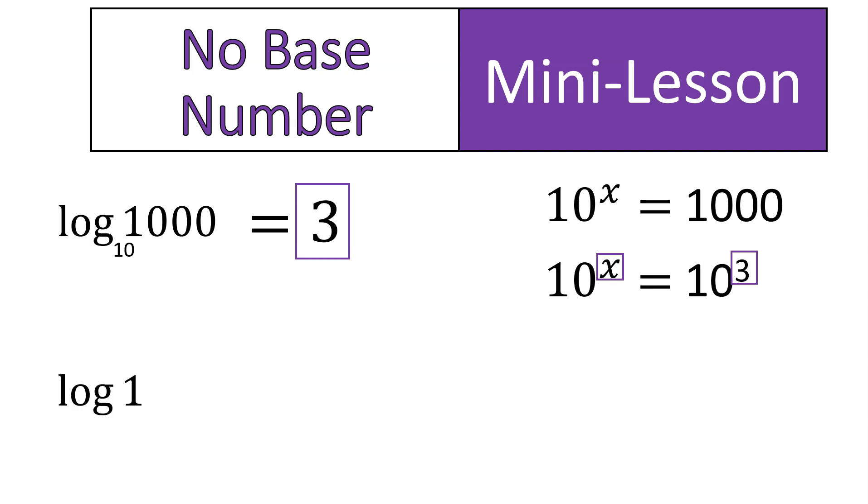Another example of that is if we have this log with the number 1 afterwards. Again, there's no base, it's not log base anything of 1. So we would fill that in as log base 10 of 1 and ask ourselves, 10 to the power of what gives us 1? We talked about this a little bit earlier that 10 to the power of 0 is equal to 1, that anything to the power of 0 is equal to 1. So in this case, the base actually didn't even change the answer. The solution would always be 0. But that's just something to know that if it's not written in there, that logarithm value would be, the base value sorry, would be 10.